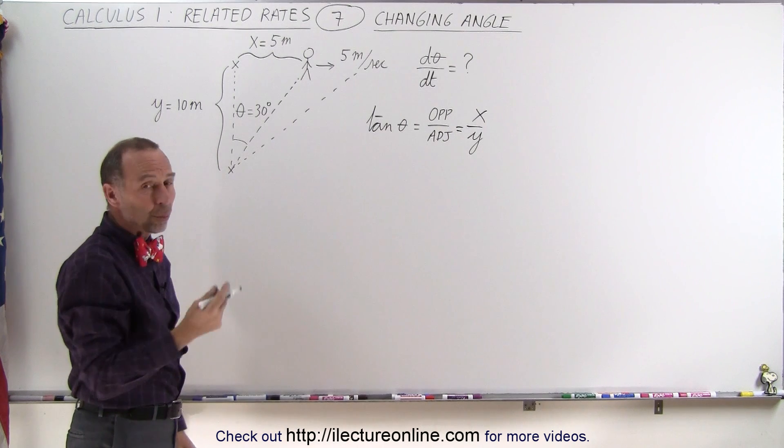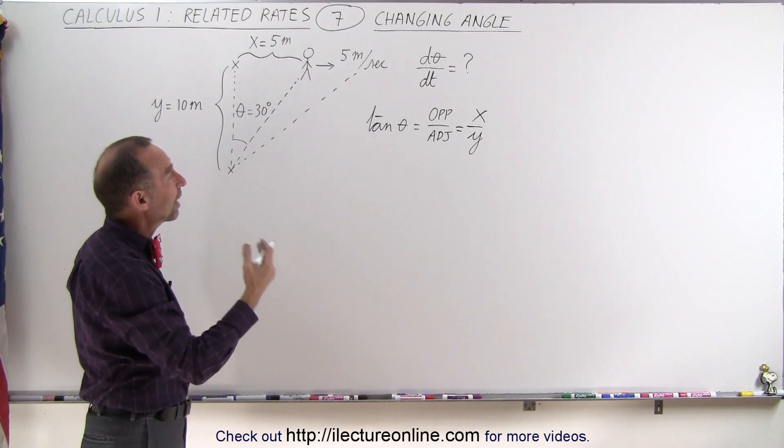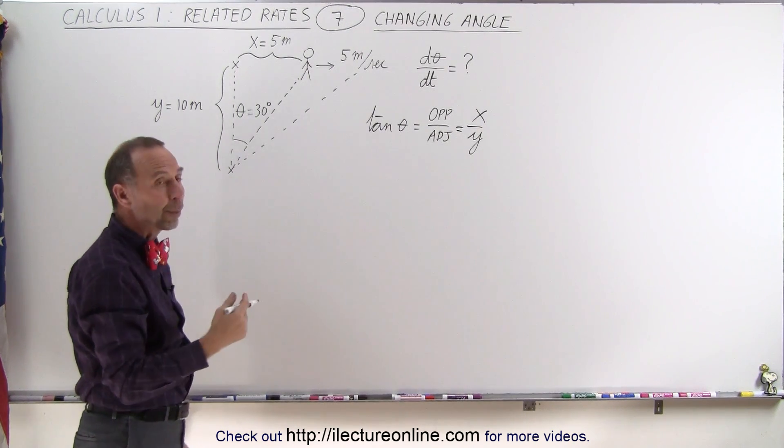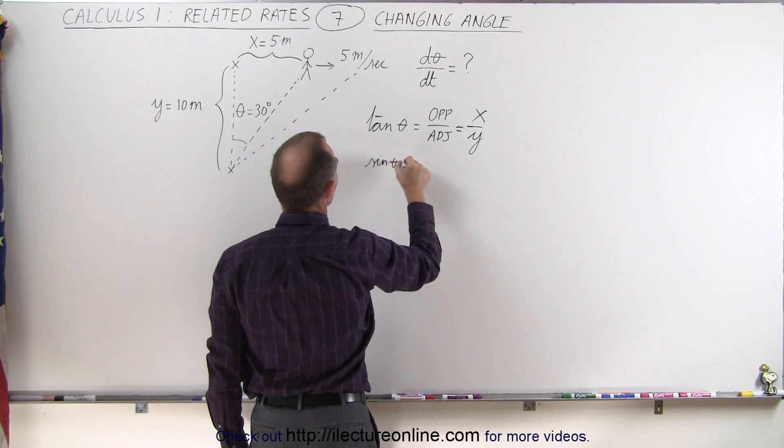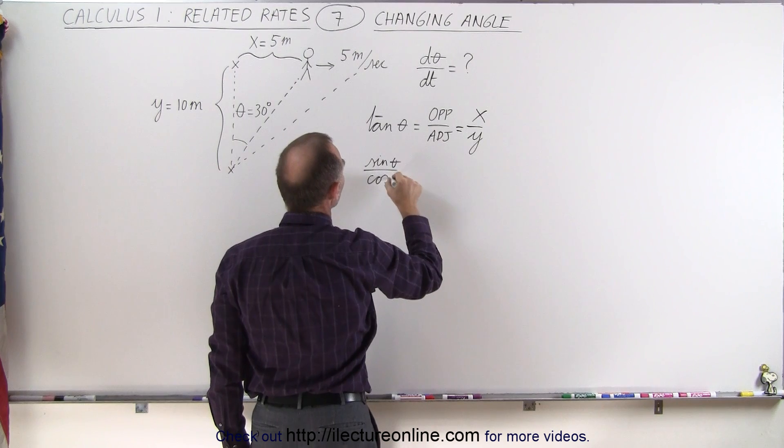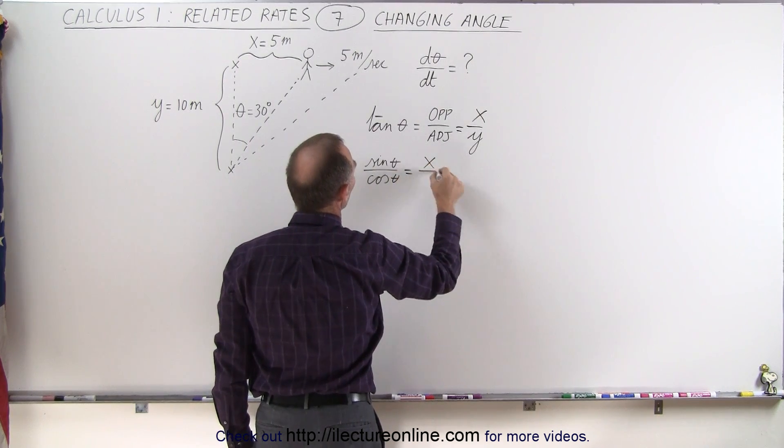So if we have an equation that says the tangent of theta equals x over y, we can rewrite that as the sine over the cosine. Sine of theta over the cosine of theta. And that is equal to x over y.